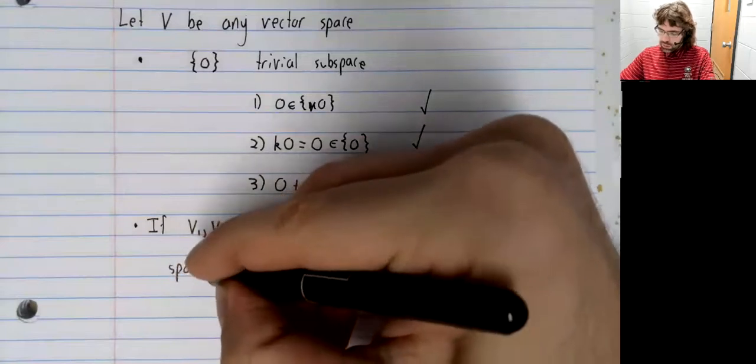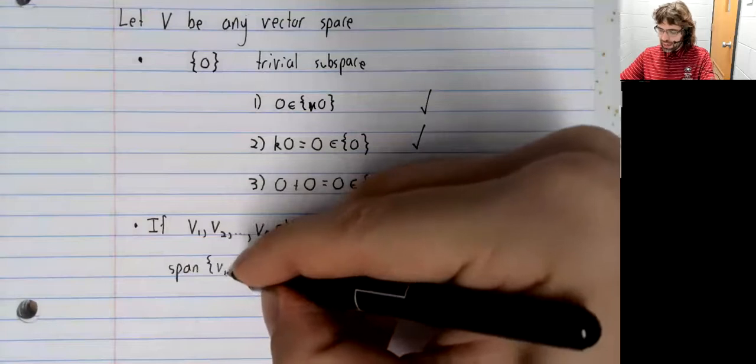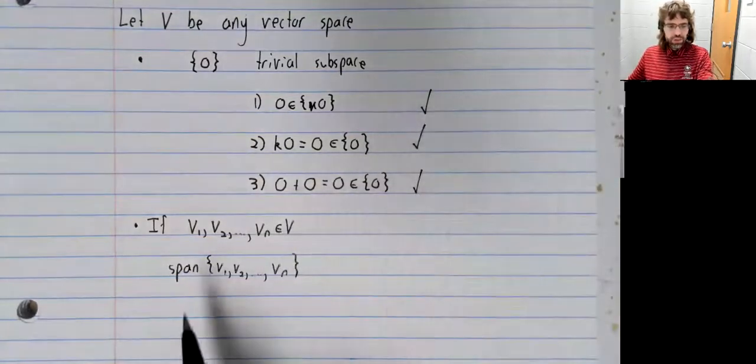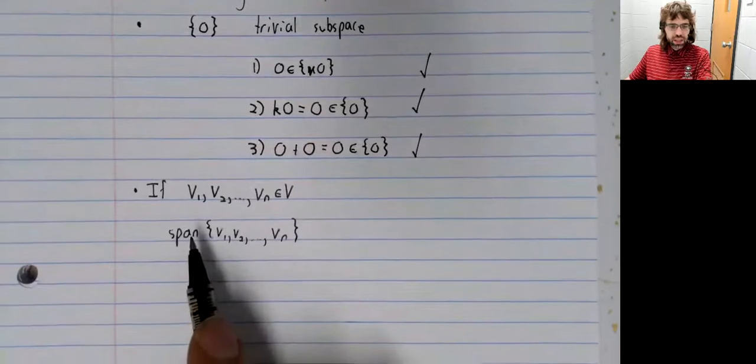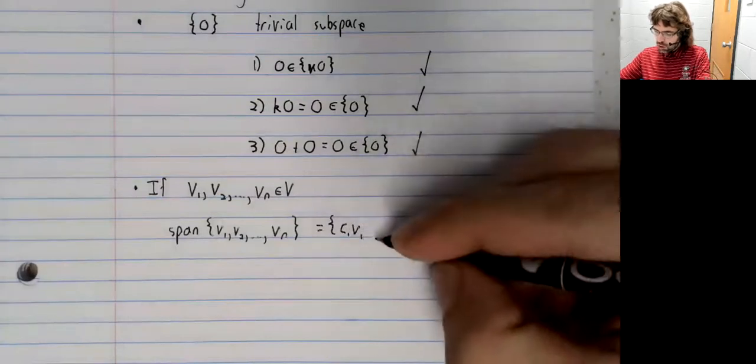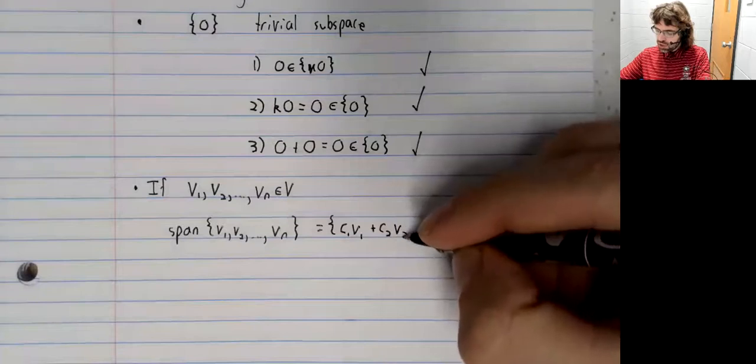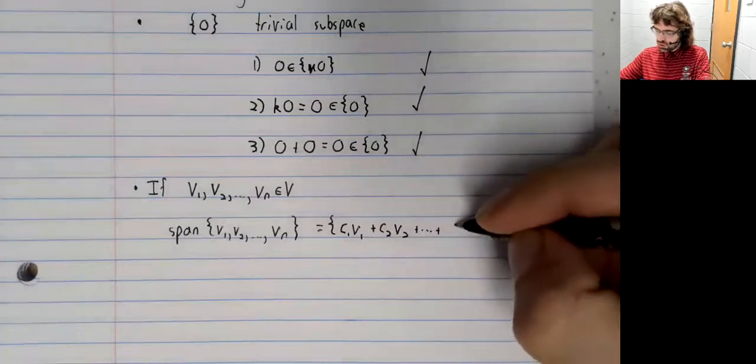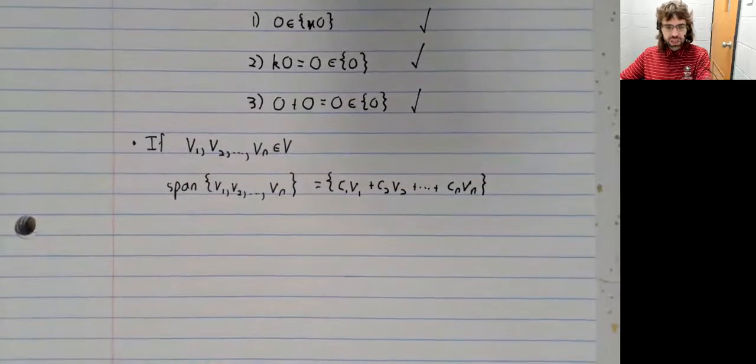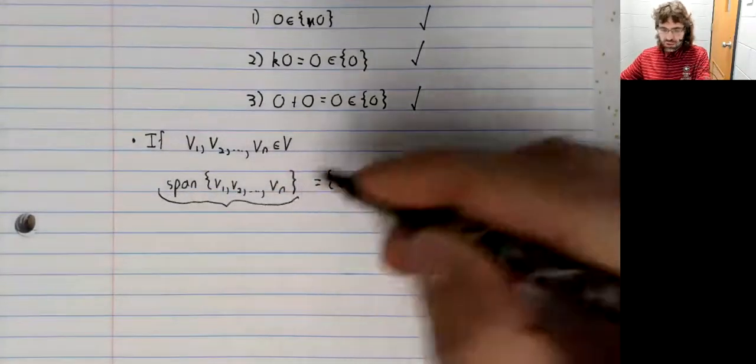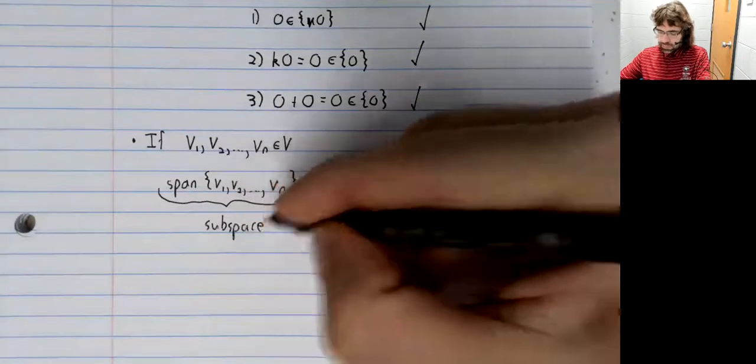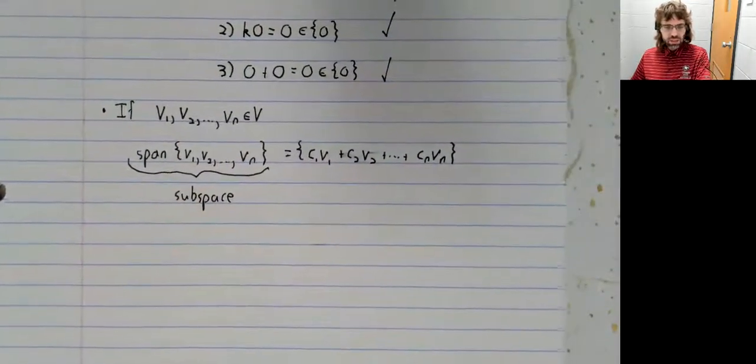So we can talk about the span of vectors. We defined this in the specific case of Rn, but we can talk about the linear combinations of vectors in any vector space. And the span is always a subspace.